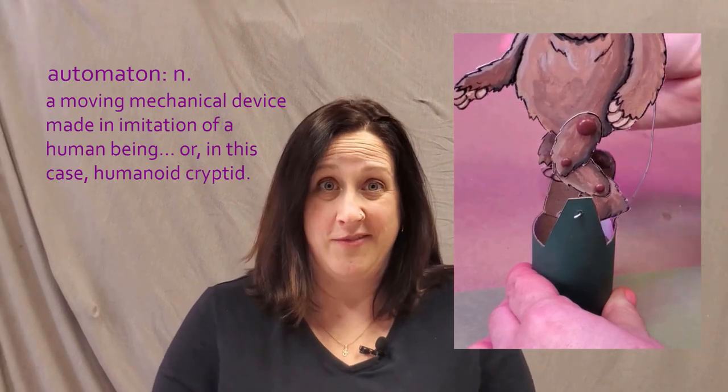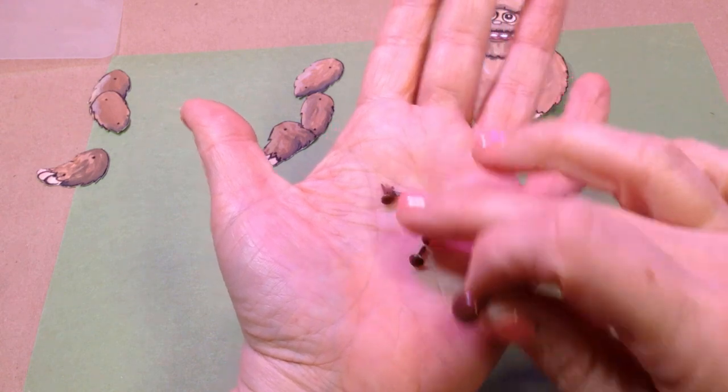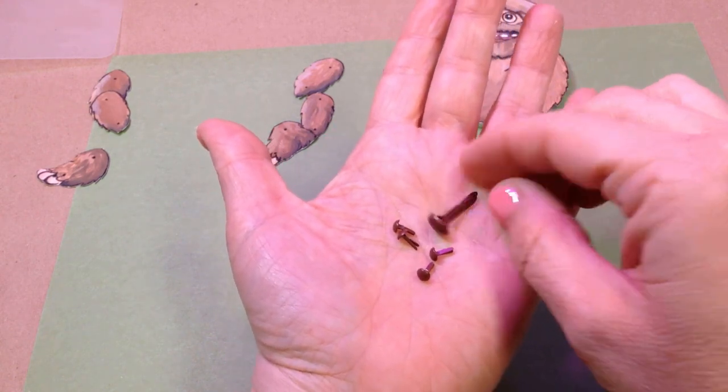Today I'm going to walk you through how I made this surprisingly simple, rewarding, and super freaking delightful walking Bigfoot automaton. He's made out of just some basic crafting supplies and some wire easily found at the hardware store. The one tricky thing that you might need to find is these split back fasteners. You can find them online or in the scrapbooking section of your local craft store.